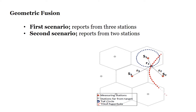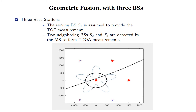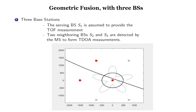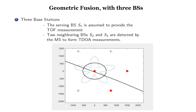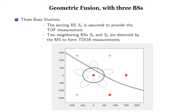The mobile station positioning problem then becomes a classical circle and hyperbola intersection problem. The first scenario assumes that three base stations are involved in the positioning process. The serving base station provides the time-of-flight measurement given by the black circle, and the next two most favorable base stations are detected by the mobile station to form TDOA measurements given by the black hyperbola.